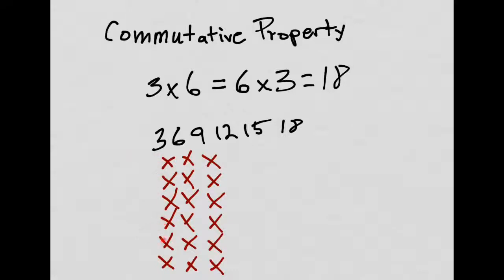1, 2, 3, 4, 5, 6. And in each group, or each row, there are 3.